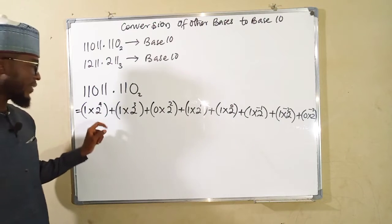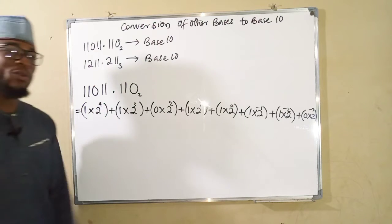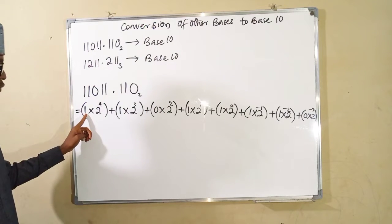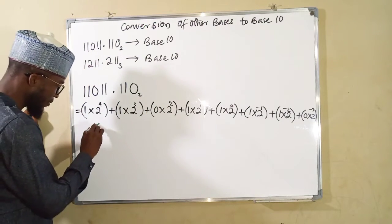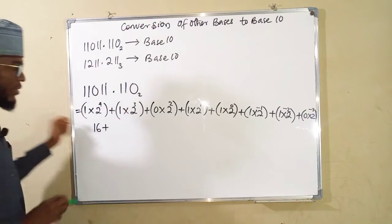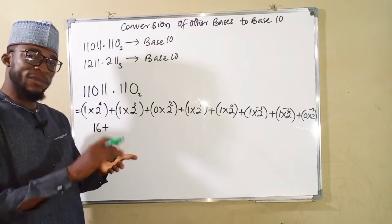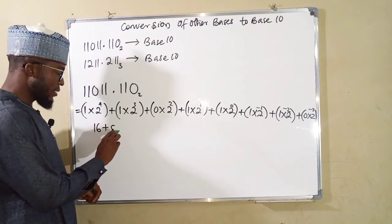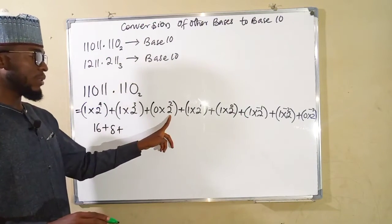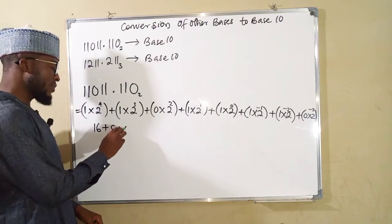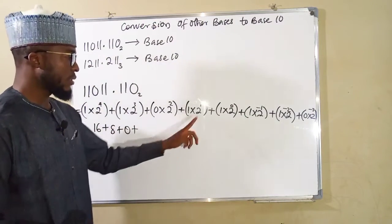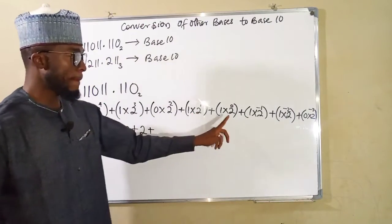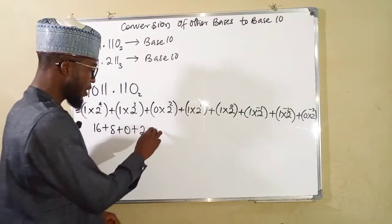We start simplifying. 2 to the power 4 is 2 times 2 equals 4, times 2 equals 8, times 2 equals 16. Times 1 is also 16. We add. 2 to the power 3 is 2 times 2 times 2, which is 8, and 8 times 1 is still 8. Plus, 4 times 0 is still 0. This is 2 times 1 is still 2. 2 to the power 0 is 1.